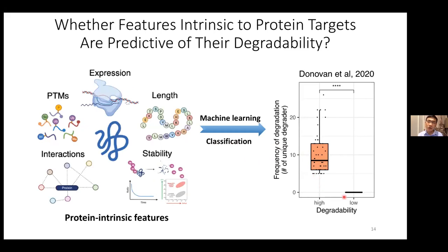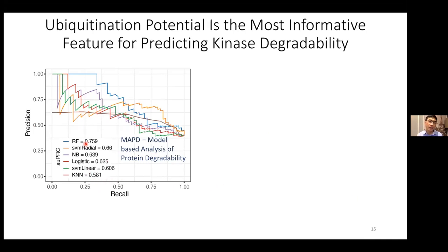We asked whether we could classify highly degradable and lowly degradable kinases based on these features using machine learning. Highly degradable kinases were those degraded by at least five different multi-kinase degraders from Catherine's study; lowly degradable kinases were those engaged by at least one degrader but never degraded. We tried six commonly used machine learning models — including Random Forest, SVM, Naive Bayes, Logistic Regression, and K-nearest neighbor — and the Random Forest model achieved the highest performance with an area under the precision-recall curve of 0.76. This model was selected as the final model, termed MAPD, short for Model-based Analysis of Protein Degradability.